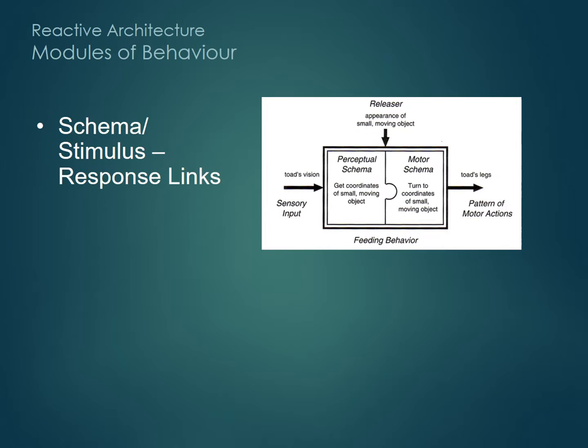The key to reactive behaviour is a direct and fast link between sensor data inputs and output actions through atomic modules of behaviour — like 'see food, eat it', 'see tyrannosaur, climb tree and wait for it to become extinct', and so on. This chimes with animal ethology schema theory, the reptilian brain for the Fs: food, flight, fight and reproduction, and Skinner Box psychology, as well as neatly fitting into an object-oriented software model.